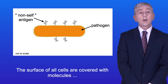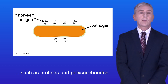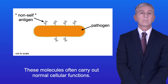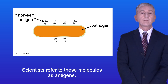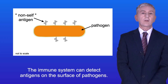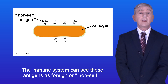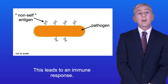The surface of all cells are covered with molecules such as proteins and polysaccharides, and these molecules often carry out normal cellular functions. Scientists refer to these molecules as antigens. The immune system can detect antigens on the surface of pathogens, seeing these antigens as foreign or non-self, and this leads to an immune response.